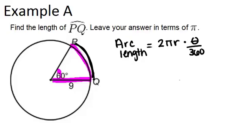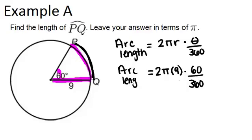So in this example our radius is 9 and we know θ is 60. So the arc length will be 2π times 9 times 60 over 360.